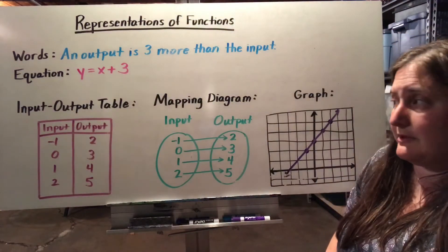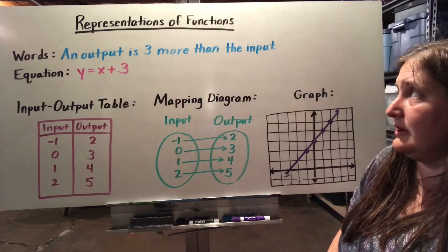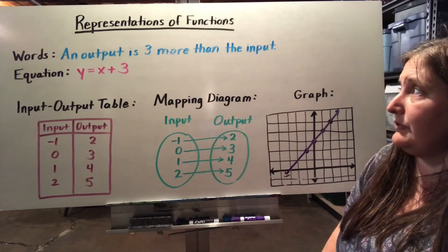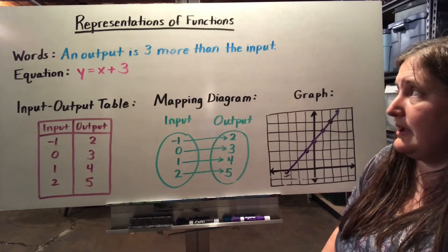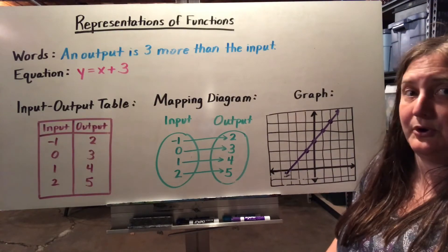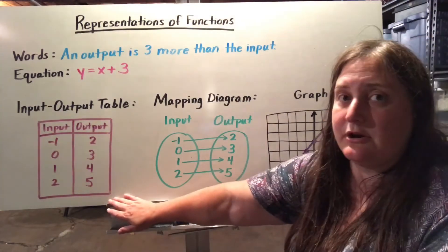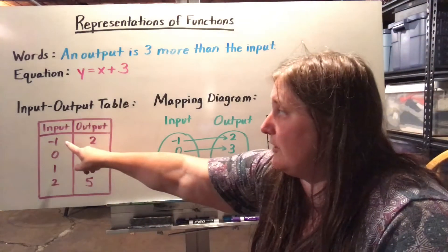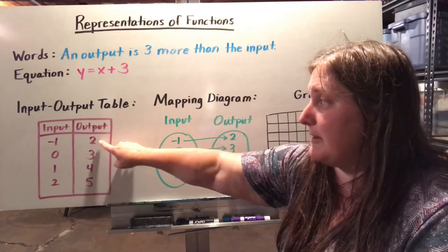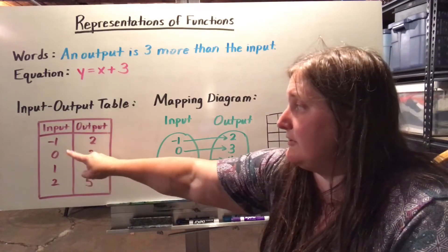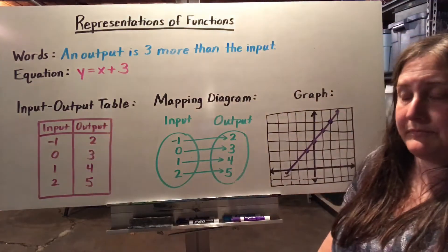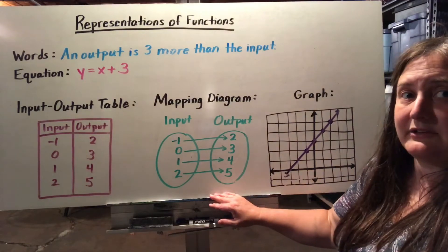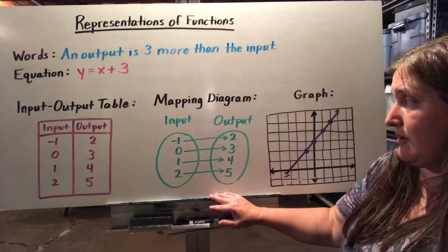We can also put information from our function in an input-output table. Since every output is three more than the input, we can list pairs: negative one and two, zero and three, and so on. A mapping diagram does the same thing — it just connects our inputs and outputs with arrows.